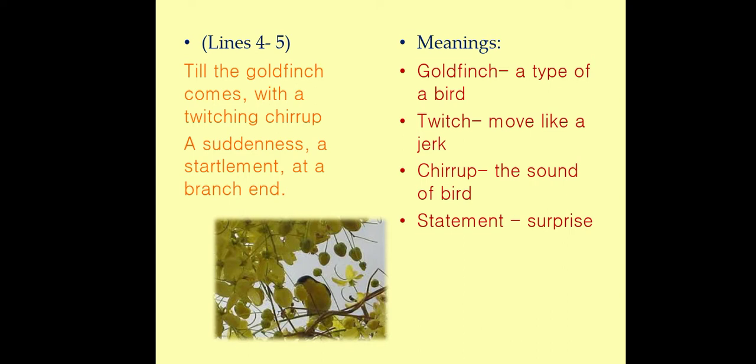The sadness prevails till a goldfinch comes with a twitching chirrup — a suddenness, a startlement at a branch end. The sadness prevails till a goldfinch comes to the tree. It is twitching its tail and making a high-pitched sound. It suddenly sits on the end of a branch, which comes as a surprise.